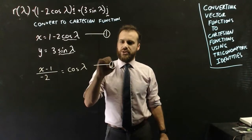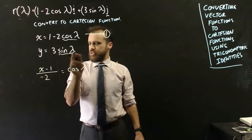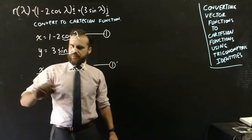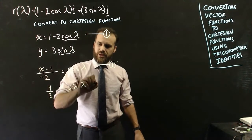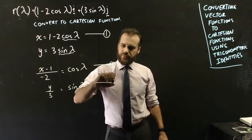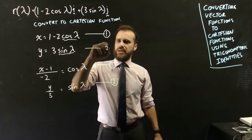And I'll just call that equation 1 down here. Now this one here is a little simpler. We can just say that y divided by 3 is equal to sin lambda here, and I'll call that equation 2 down here because that must be equation 2.